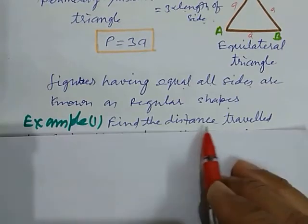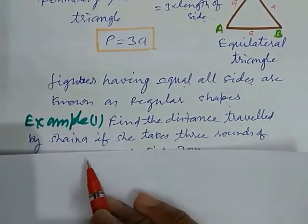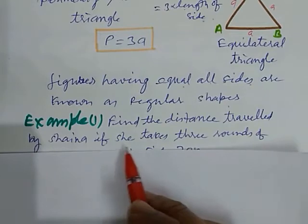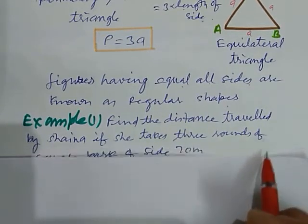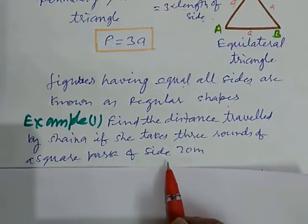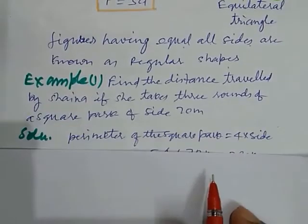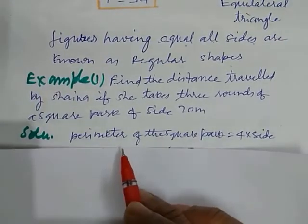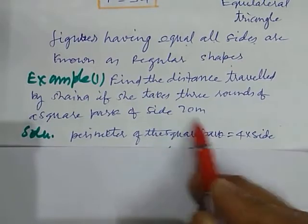Find the distance travelled by China if she takes three rounds of a square park of side 70 meter. So what is given to us that side of square?